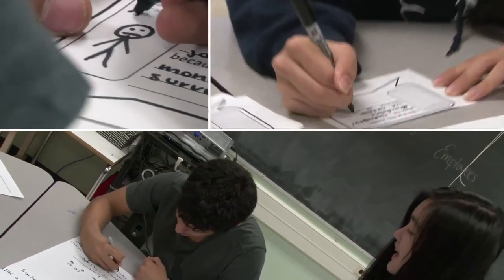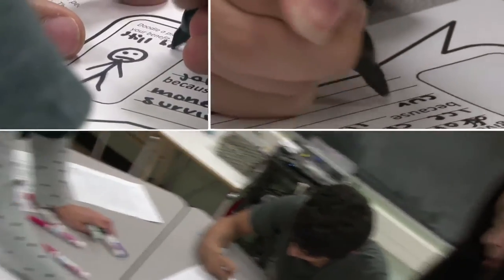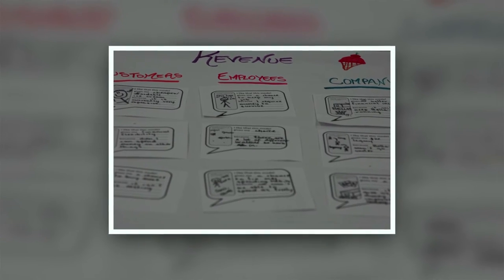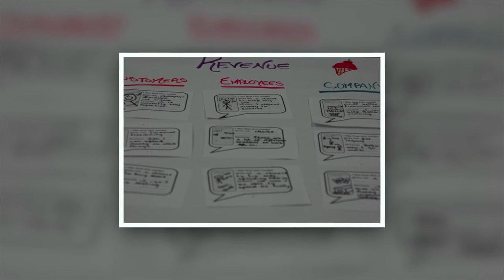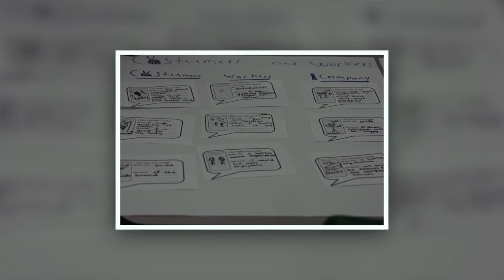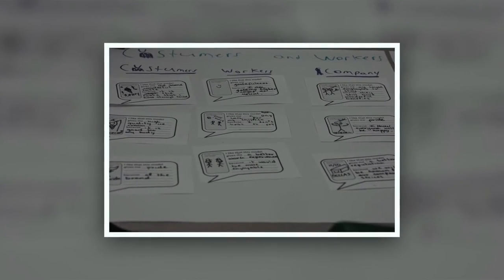A lot of times you make pro-con lists, right? What integrative thinking says is actually you want to do a pro-pro list. You want to look at what's good about the different options. Because if you're going to create a better answer, you want to take what's good about what currently exists and use that as your foundation for something better.